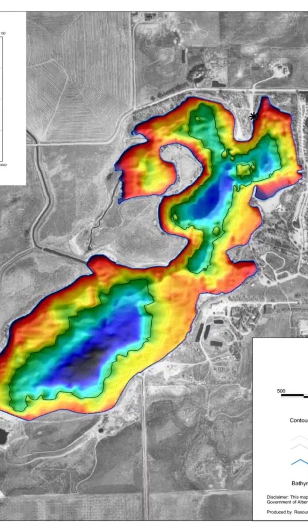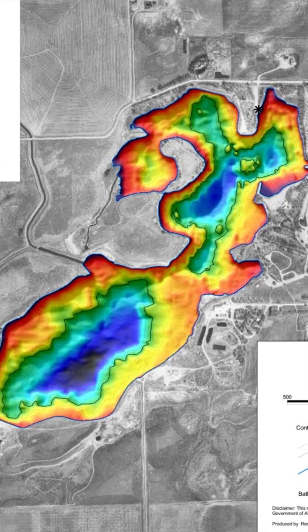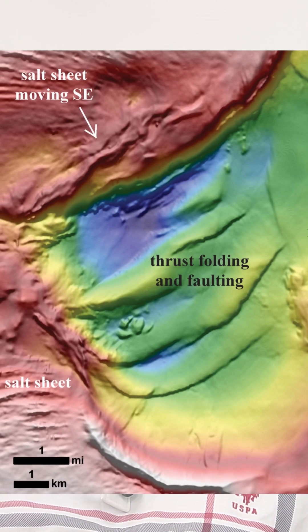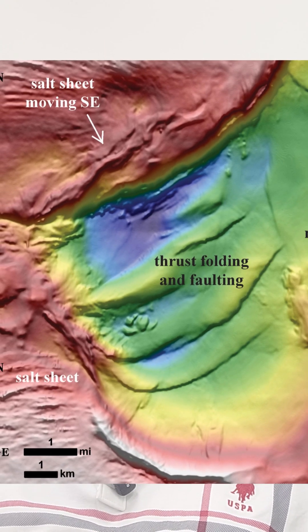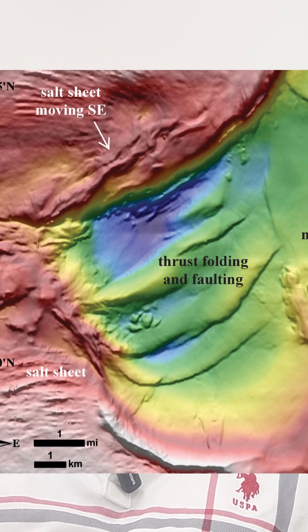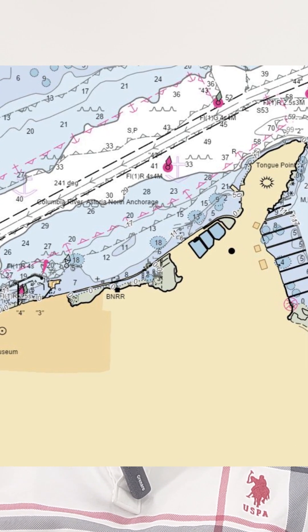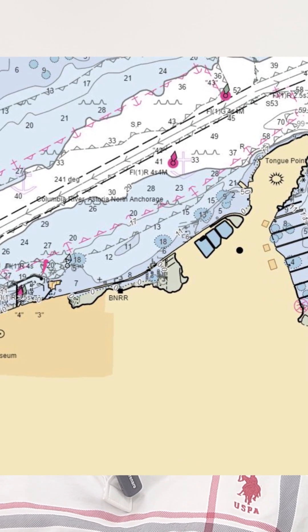So in summary, bathymetric charts are detailed underwater terrain mapping for scientific and environmental purposes, whereas hydrographic charts are simplified mapping for safe navigation. I hope this small video helps you understand the differences and similarities between hydrography and bathymetry charts.